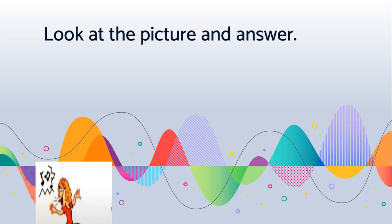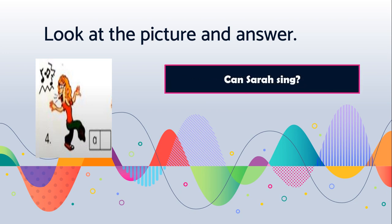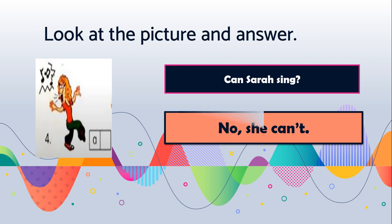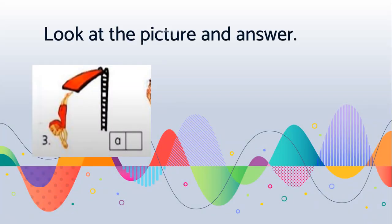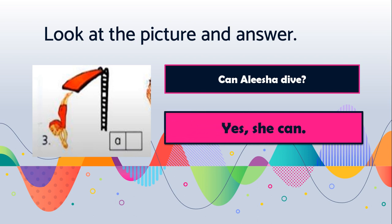Next, look at this picture — singing. So the question is: can Sarah sing? No, she can't. This is a girl, so you will use she. So: no, Sarah can't, or she can't. And then look at this picture — dive. So: can Alisha dive? Yes, she can.